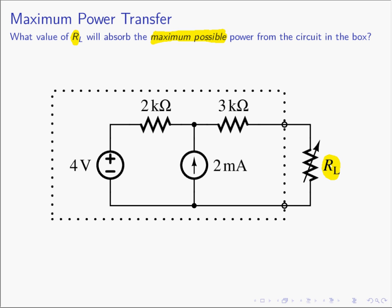Since we have the freedom to choose R sub L, which value do we choose to get maximum possible power? The resistor R sub L could take on an infinite number of values. We could analyze the circuit in the box and derive which R sub L to choose, but as soon as someone changes a value — say, a 4-volt source to something else — we'd have to redo our analysis. Likewise, if anyone changes any value inside the box, we redo all of our work. Also, doing the derivation for this particular circuit topology is kind of wasted effort because it's only good for a circuit that looks just like this.